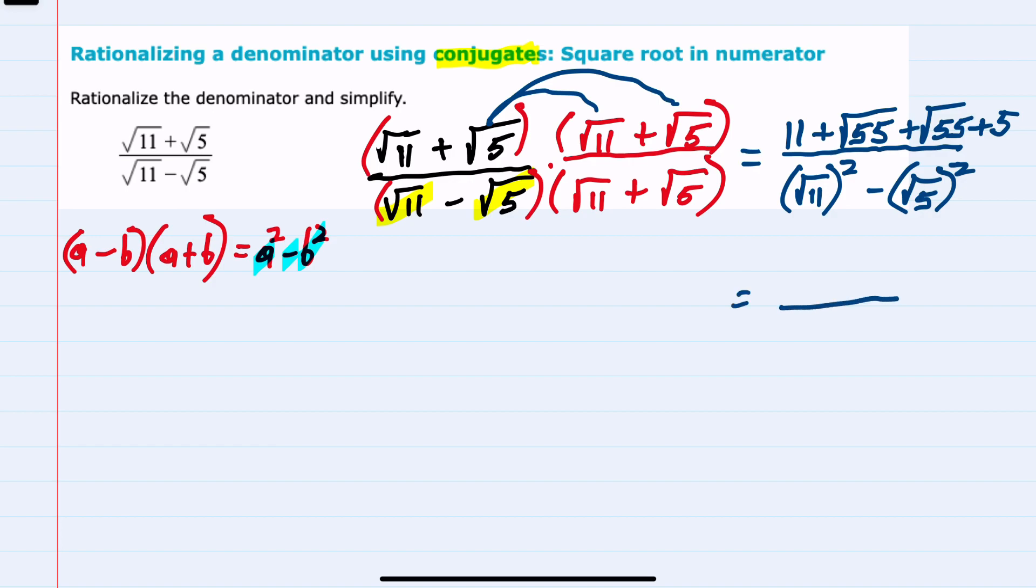And from here, we can begin to simplify. In the numerator, we have these numerical parts that are like terms. We can combine like terms. 11 plus 5 is 16. And then we have this same square root of 55. We have one of them plus another, so plus 2 square roots of 55.